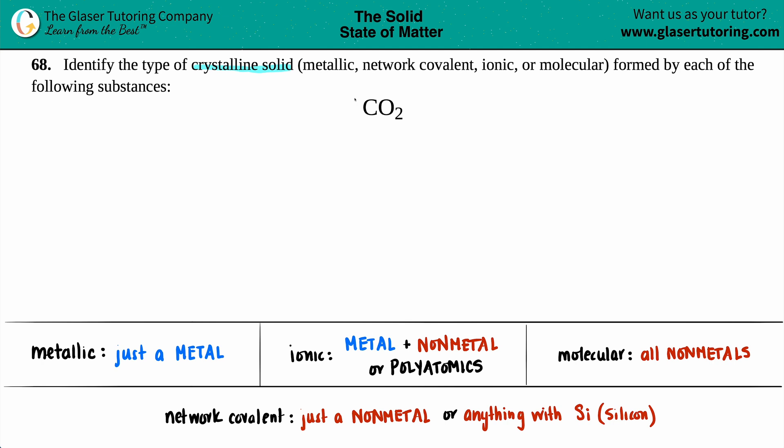There are four different crystalline solids. We have to figure out which one is CO₂. I wrote down a cheat sheet that we'll go through. Let's start from left to right. A metallic crystalline solid will be formed if...